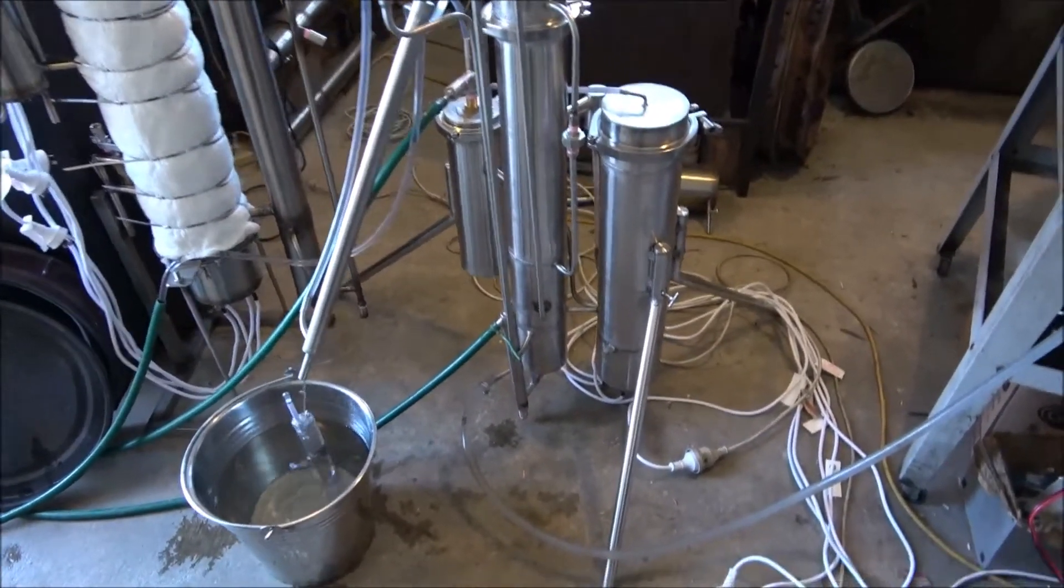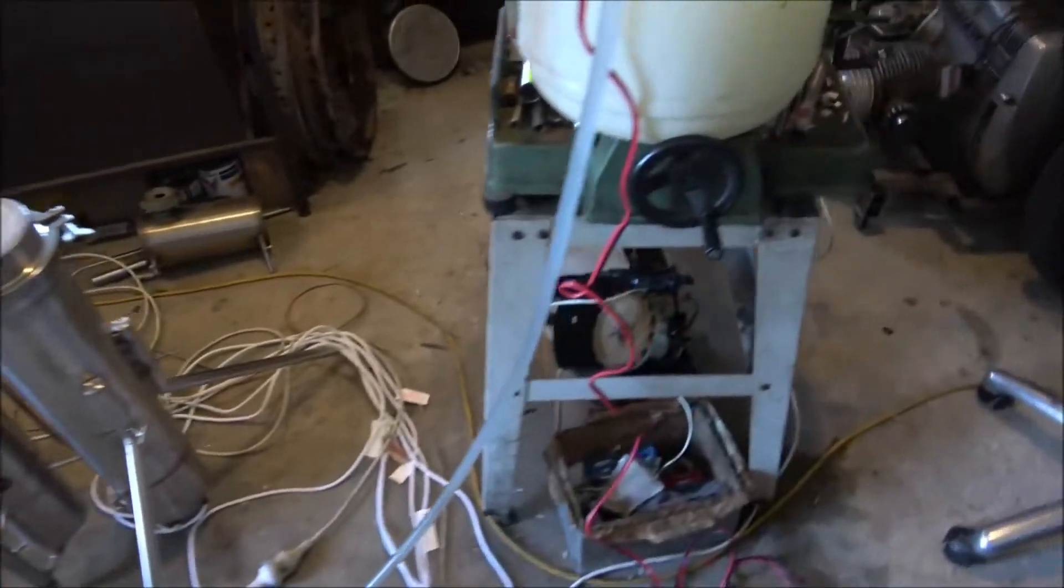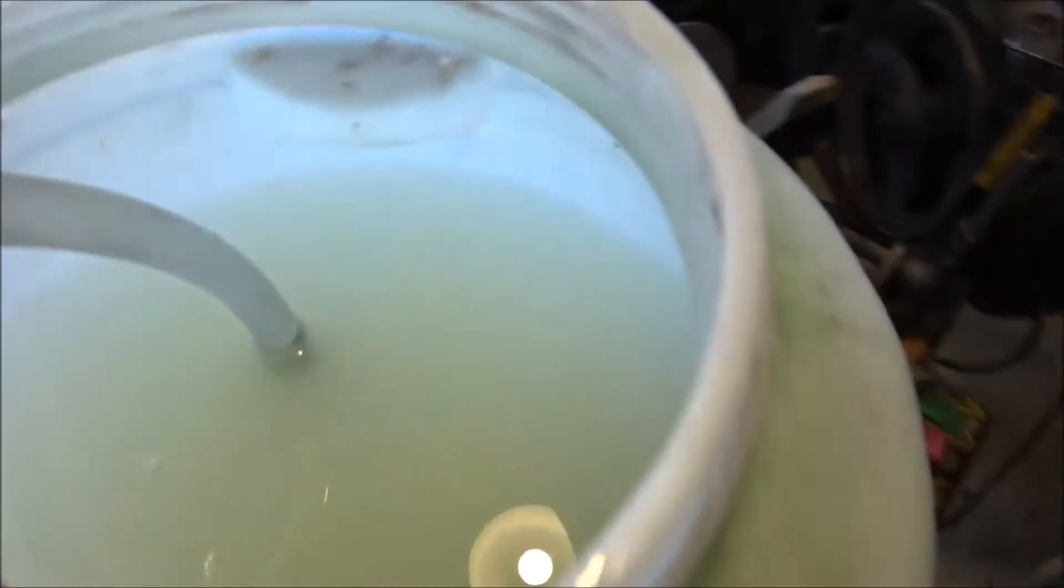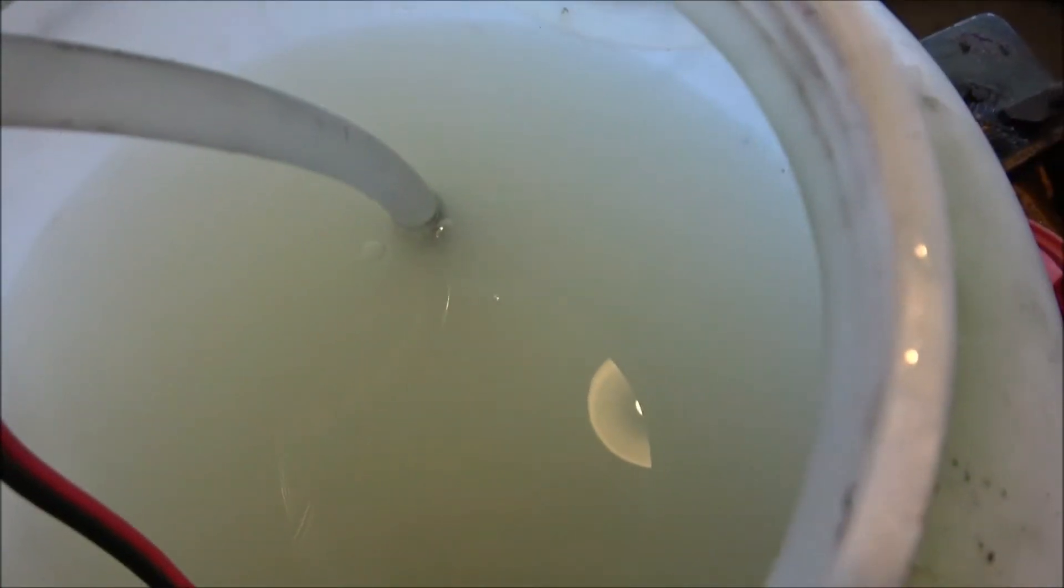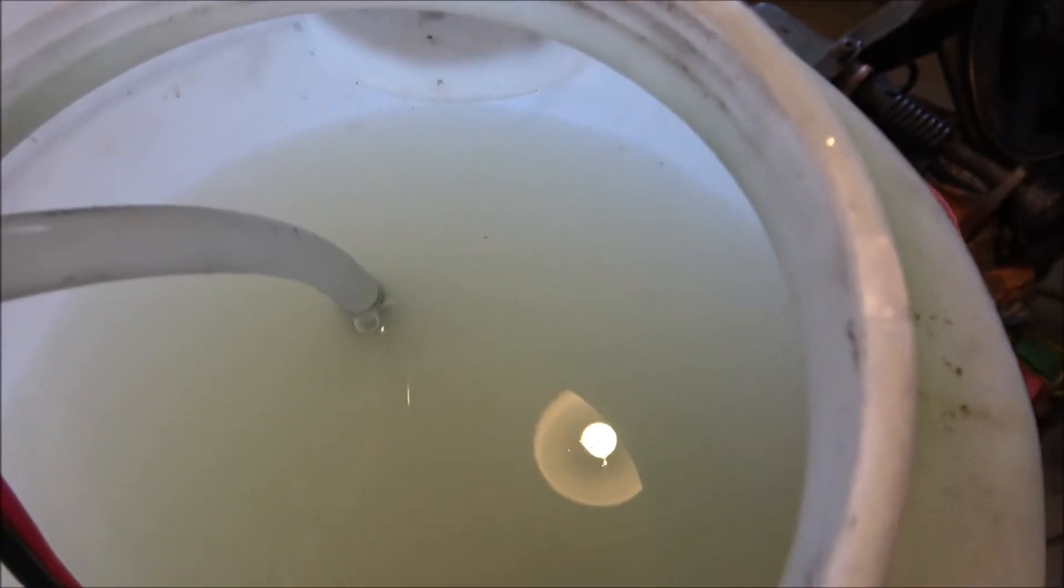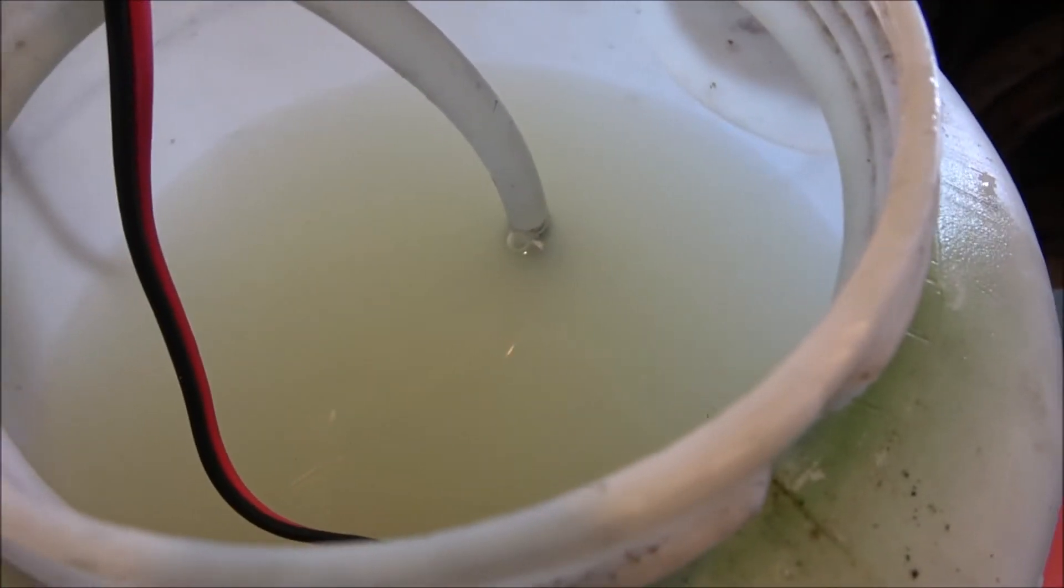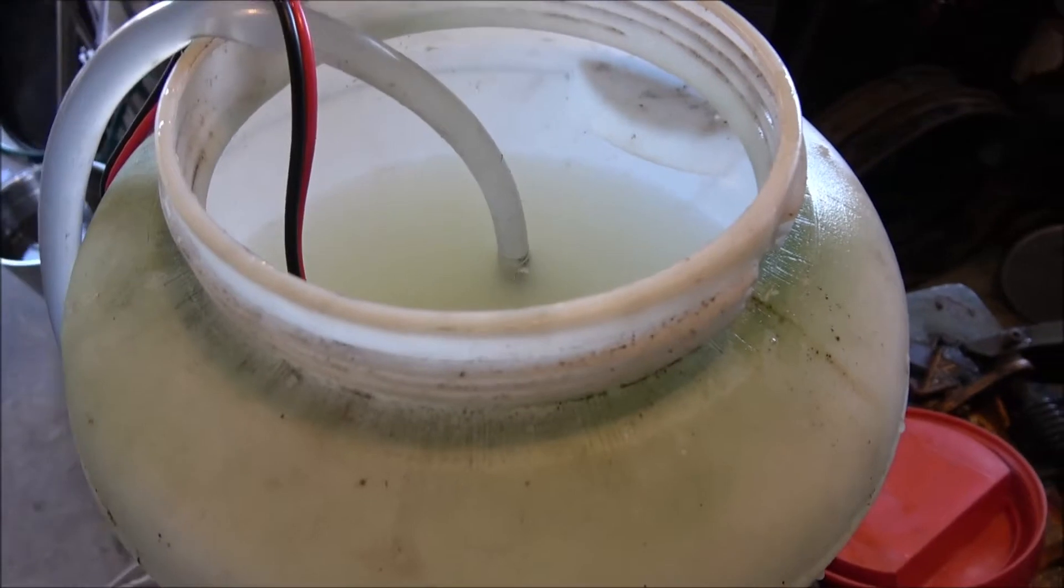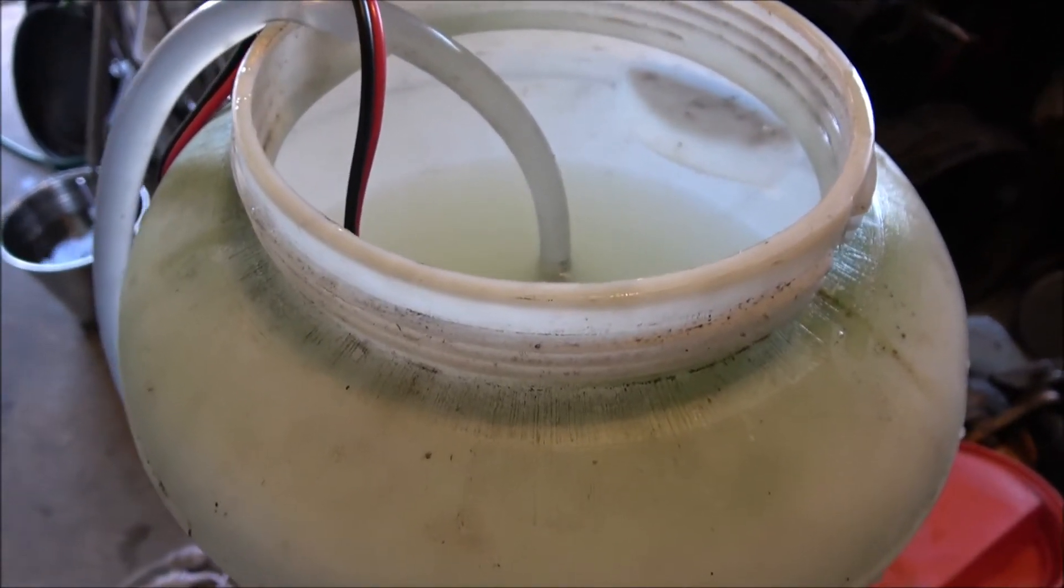And now we're running sugar-based wash. We've got a submersible pump. It pumps the wash into the steel continuously and we're controlling the flow with the control valve.